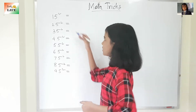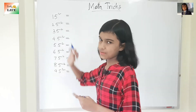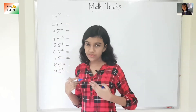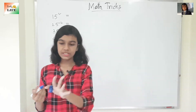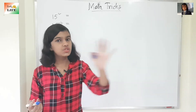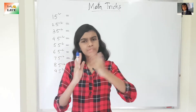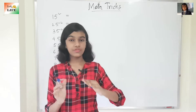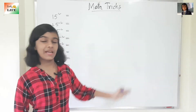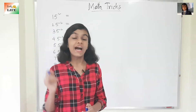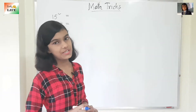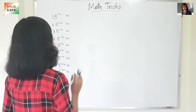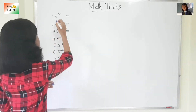Suppose 15 square — how do you find it out? We multiply 15 into 15. It becomes a long process, but I'm going to tell you a trick by which you can find out the square of numbers ending with 5 in seconds.